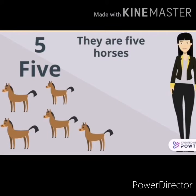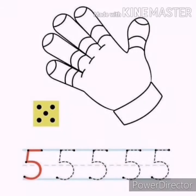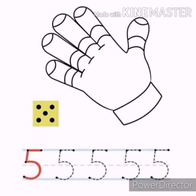What is this number? Number five. How many horses are there? Let's count: one, two, three, four, five. There are five horses. What's this number? Number five. How many fingers? Let's count: one, two, three, four, five.